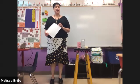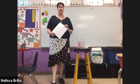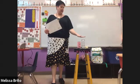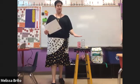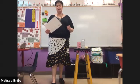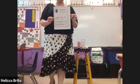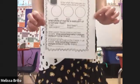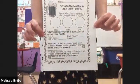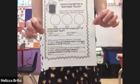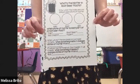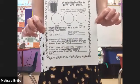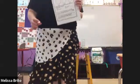Hi second grade. Today we are talking about properties of matter and classifying matter, and we are going to do that through making a root beer float. In your Seesaw you have a sheet that looks like this, and you are going to need to answer the questions on here after you watch the video. So pay close attention as this happens.